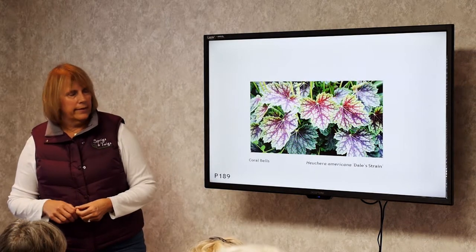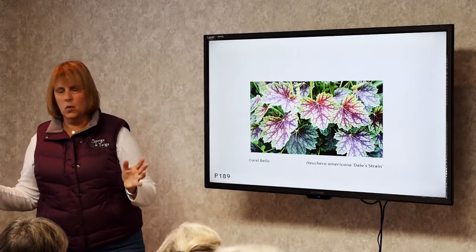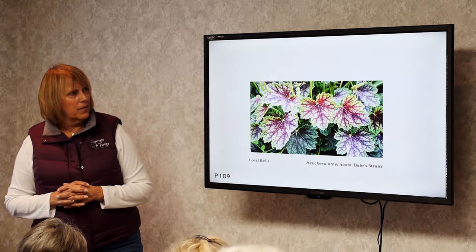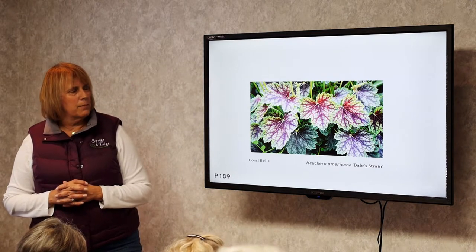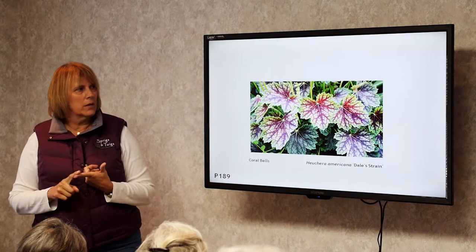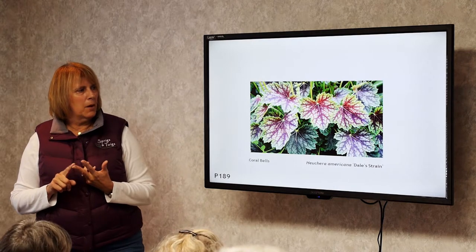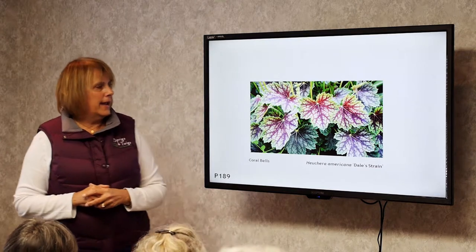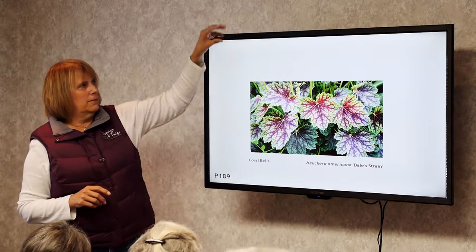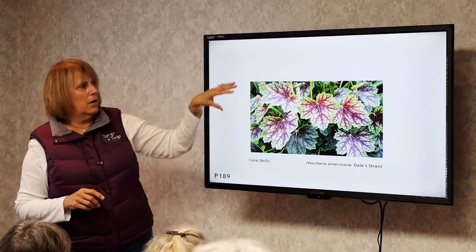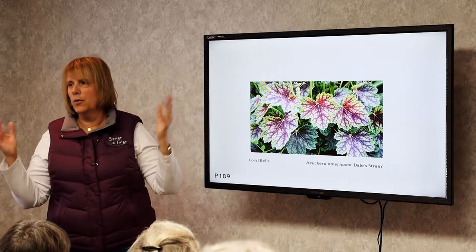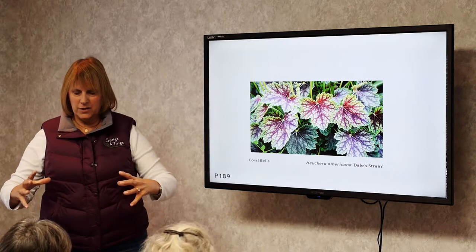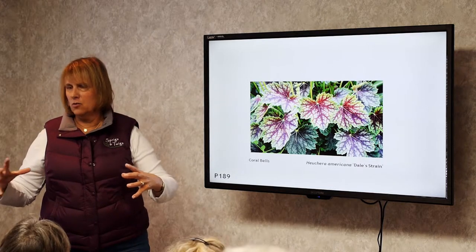Coral Bells. There are tons of coral bells varieties, but this is a native coral bell, Heuchera americana. This particular one has either a white or pink bell-shaped flower, but the really pretty feature is the leaf. Once the flowers are gone, this beautiful leaf is what's left. As with all coral bells, the leaves are pretty. It stays as a clump and just becomes a larger clump as it grows.